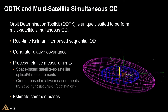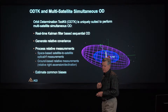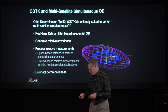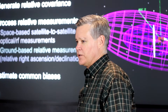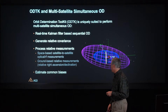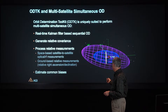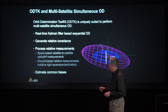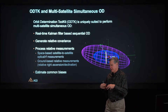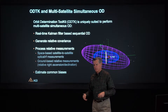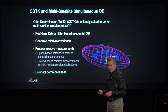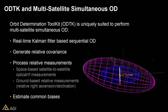The way ODTK performs simultaneous orbit determination is using a real-time common filter — an estimation technology that processes measurements individually forward in time. At any point in time, the satellite estimates contain information corresponding to all measurements taken prior to that time. Along with the orbit estimate, we generate an estimate of the orbit error uncertainty. We can also extract relative orbit error uncertainty when performing multi-satellite orbit determination, and that's what's of particular interest in many of these problems.